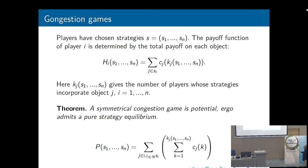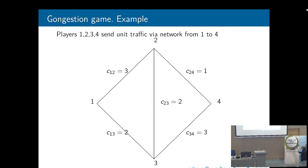The potential in a congestion game has the following form: it is a sum over all objects chosen by the players, and the second sum runs over all players from 1 to Kj — the actual number of players selecting object j — of Cj of k. So we can find the equilibrium by finding the maximum of this potential function. As a model example, suppose 4 players send unit traffic from node 1 to node 4, and the capacities of the links are as presented in the figure.